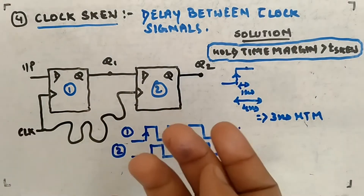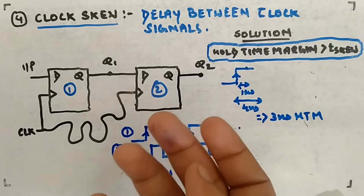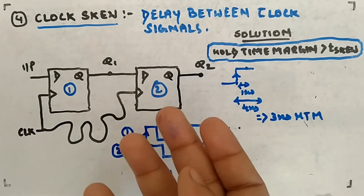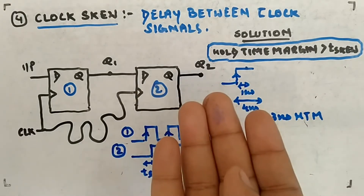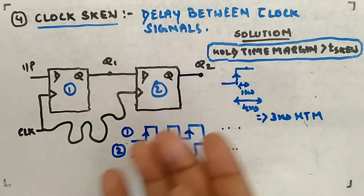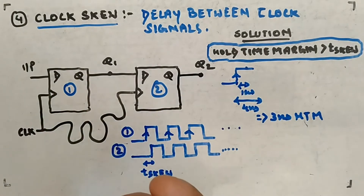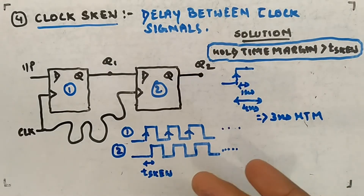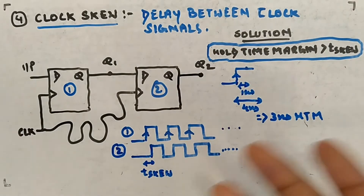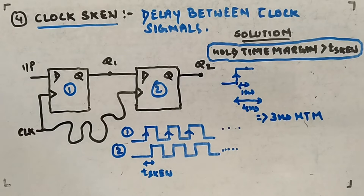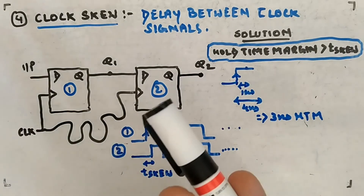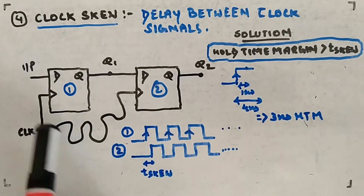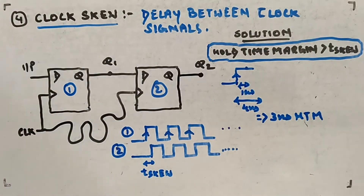You might think why the clock signals have to go together to these two flip-flops. The answer is there is a type of circuit called synchronous circuits, which we'll see later on, where the clock has to be given together to all the flip-flops. To work properly — I'll tell you the details later — but for now, just imagine this is a synchronous circuit whose clock has to be given simultaneously to all the flip-flops.